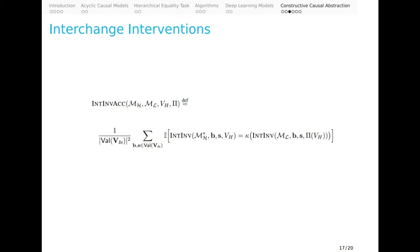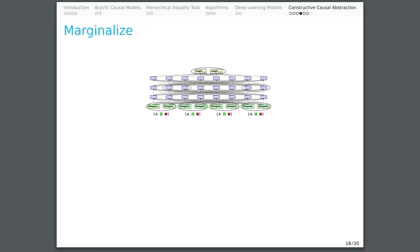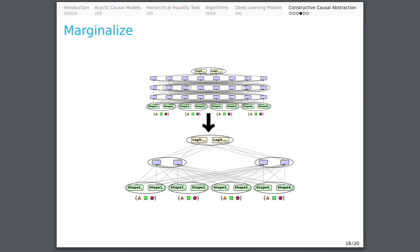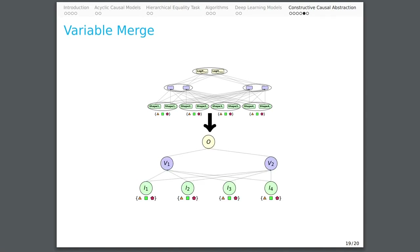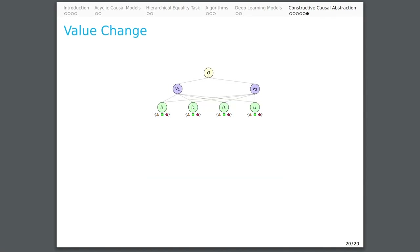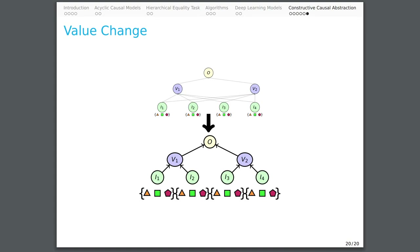A different perspective on constructive causal abstraction is that a high-level model is an abstraction of a low-level model only when the low-level model can be simplified into the high-level model through three operations. First, marginalize away all low-level variables that are not aligned with any high-level variable. Second, merge together sets of low-level variables aligned with high-level variables. And third, change the values of these merged variables to match the high-level model. In this step, changing the value spaces of variables can result in a simplified causal graph structure, because causal effects on the low-level variables may not result in changes that can be observed at the high level.